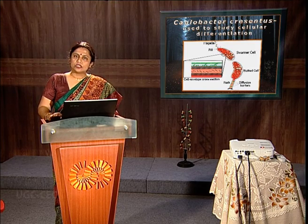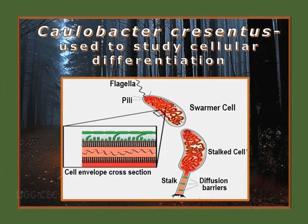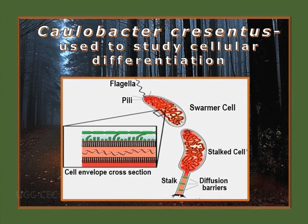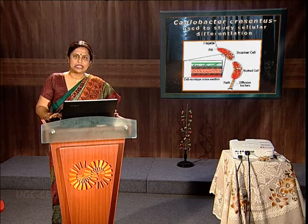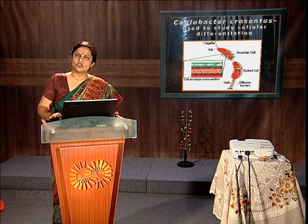The next important model bacterium is Caulobacter crescentus. It is so important because it can have two alternative modes of life cycle. One is called the swarming cell, which can undergo chemotaxis and form flagella. The second form is called the stalked cell, which is devoid of flagella, is rigid, resides in a static state, and remains adhered to the place where it is residing.